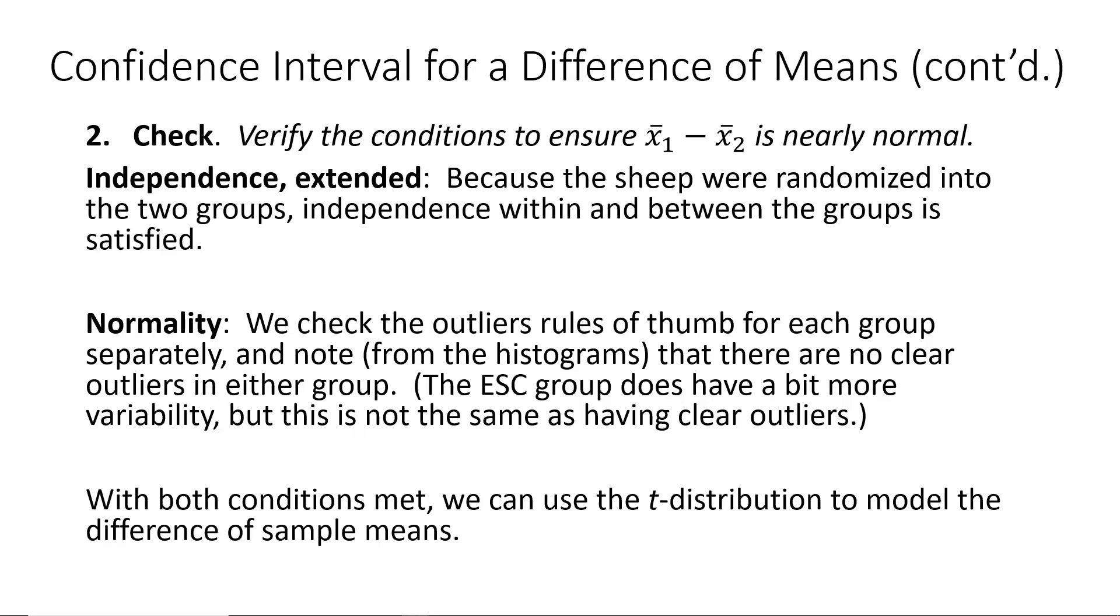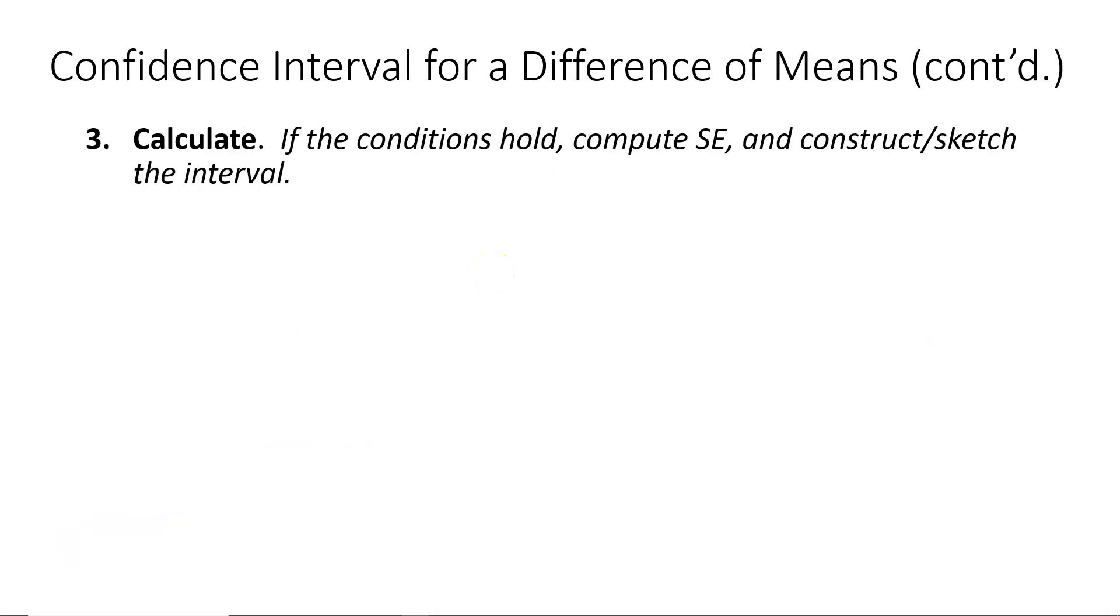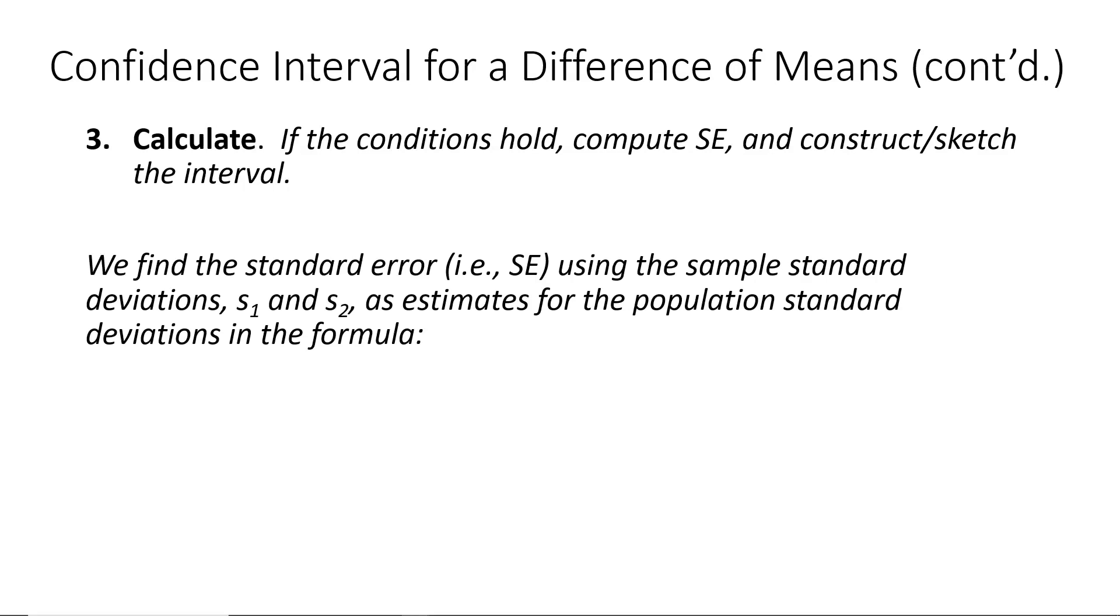We now move on to the calculate step of our four-step process. Since the conditions that we were checking for held in our check step, we are going to start by computing the standard error. Take note that we find the standard error using the sample standard deviations, s₁ and s₂, as estimates for the population standard deviations in the formula that we have from the central limit theorem. Notice in the original formula would be the population standard deviations. We have changed those to use the sample standard deviations. When we plug our values in for the sample standard deviations, we come up with a standard error of approximately 1.954. The standard error was rounded to one decimal place more than the sample statistics that we were provided with in the problem statement.